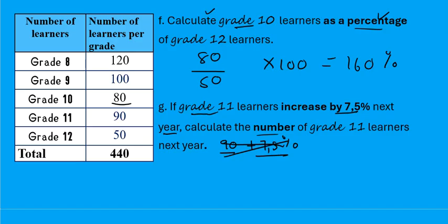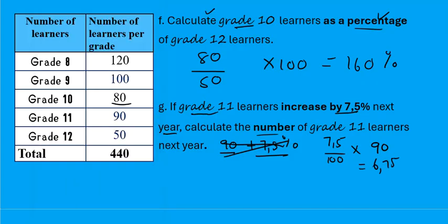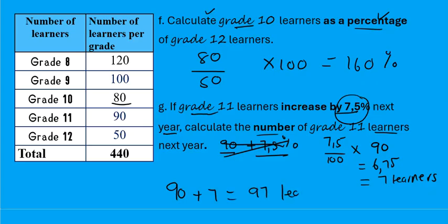Apply the golden rule: change 7.5% to a number so we can add a number to a number. Write 7.5% as a fraction over 100, then multiply by 90 grade 11 learners. This gives us 6.75. Learners must be discrete, so we round up to 7 learners. Grade 11 increases by 7 learners, so from 90 this year, there will be 97 learners next year.